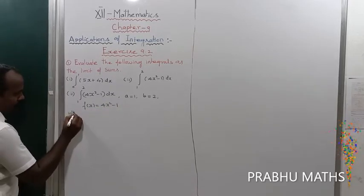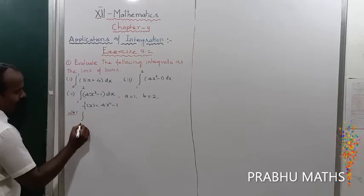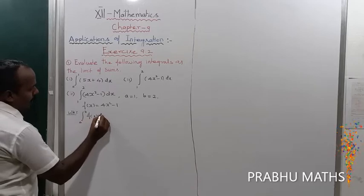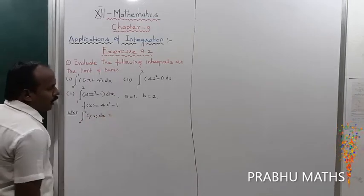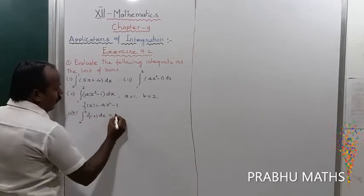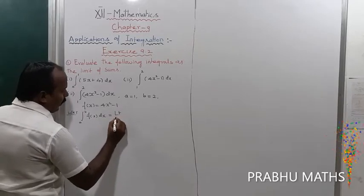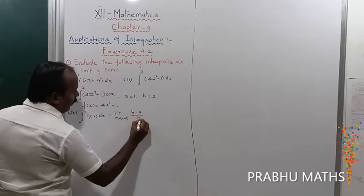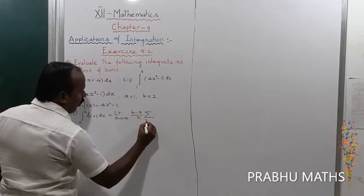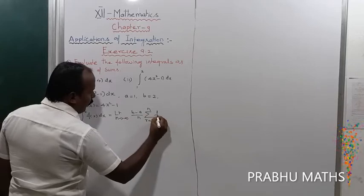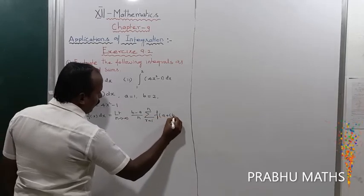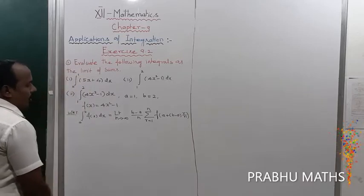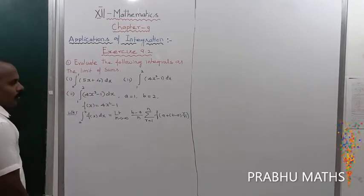We know that the formula: the integral from a to b of f(x) dx is equal to the limit as n tends to infinity of (b minus a) divided by n, times the summation from r equals 1 to n of f of a plus (b minus a) times r divided by n. That is the formula. Now replace the a value and b value.